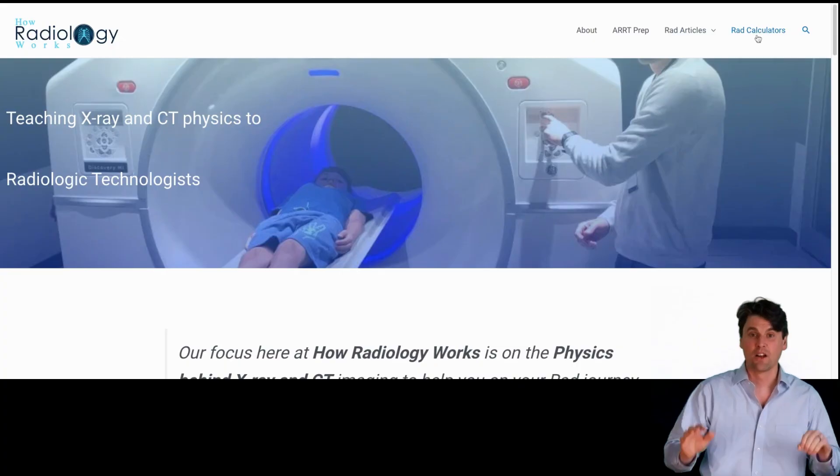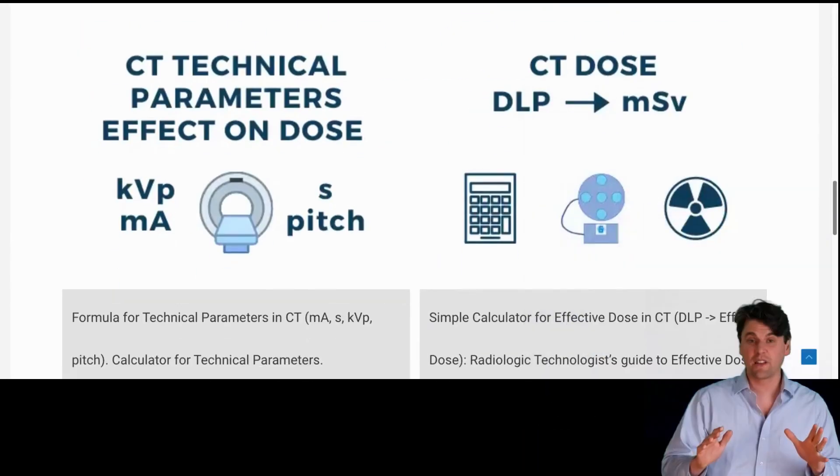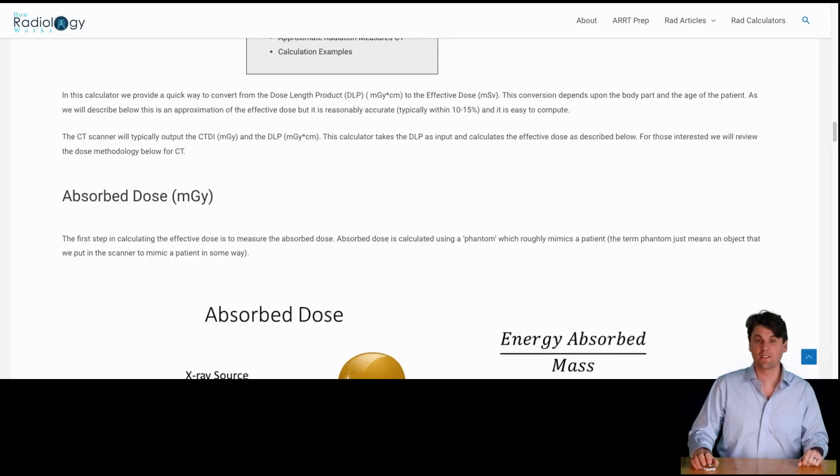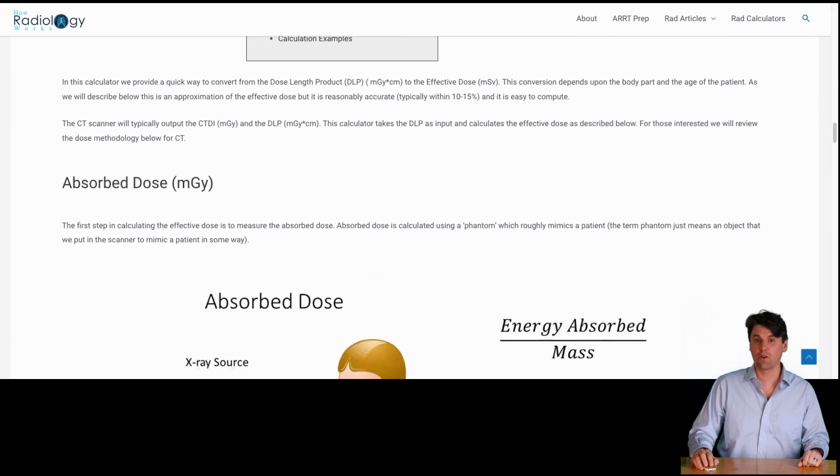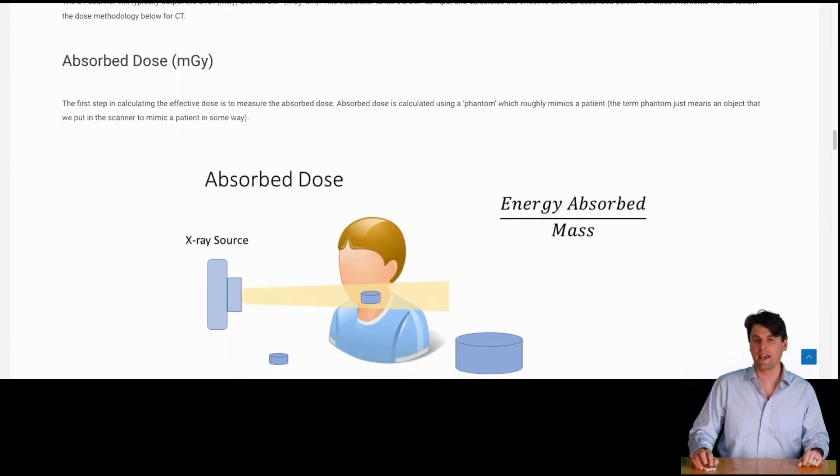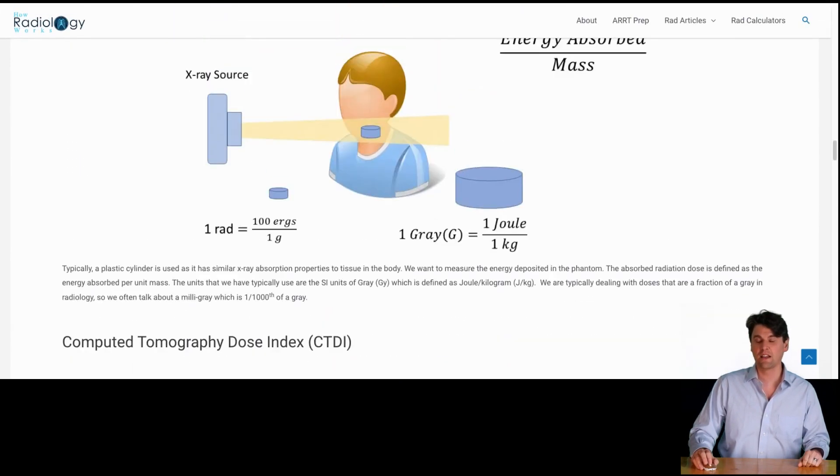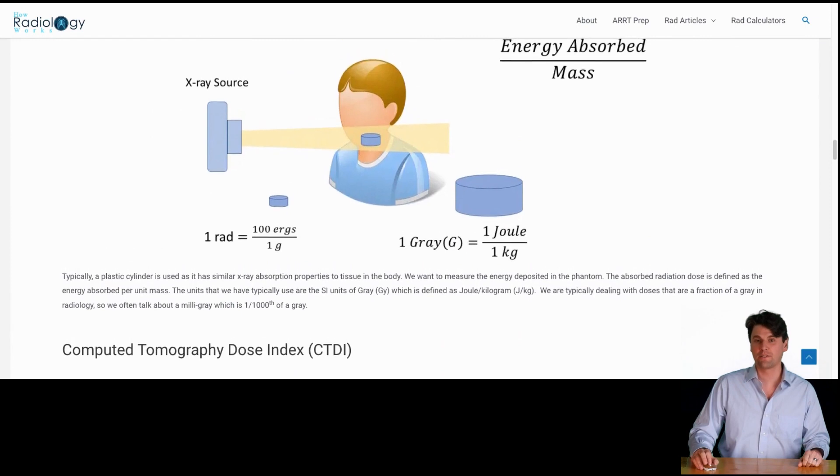On our website, we have a calculator. If you go to howradiologyworks.com and go up to the right, click on the calculators. One of the calculators is about going from DLP to millisieverts. That's the one you want to click on. For today, we're going to skip the calculator part and go through the discussion of how we get from CTDI to the effective dose.